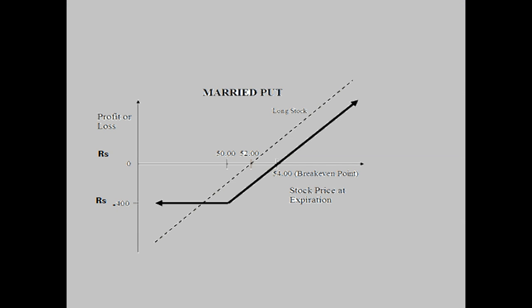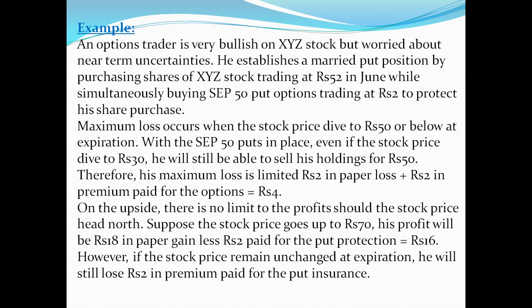Let's go ahead with the example. An option trader is bullish on XYZ stock but worried about near-term uncertainties. He establishes a married put position by purchasing shares of XYZ stock trading at rupees 52 in June, while simultaneously buying September 50 put options trading at rupees 2 to protect his share purchase. Maximum loss occurs when the price dives to rupees 50 or below at expiration. With the September 50 puts in place, even if the stock price dives to rupees 30, he will be able to sell his holdings for 50. Therefore, his maximum loss is limited to rupees 2 in paper loss plus rupees 2 in premium paid, equal to rupees 4.